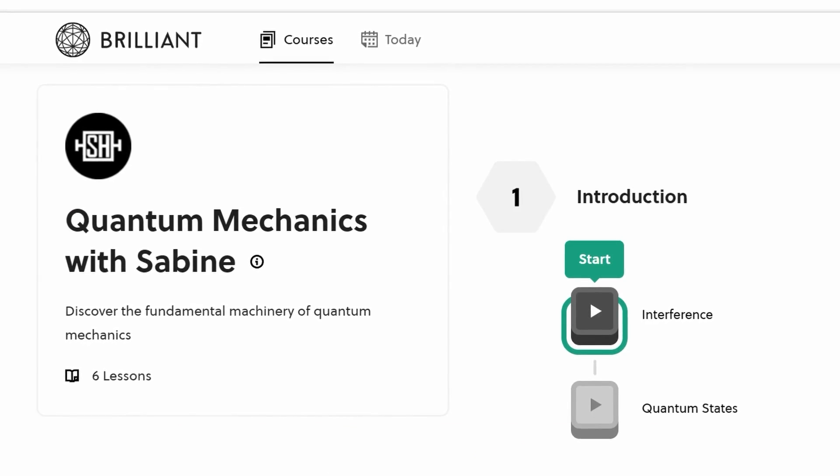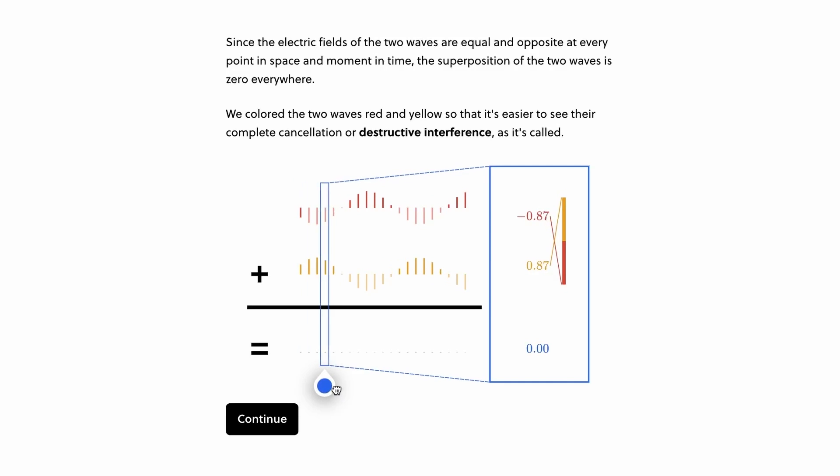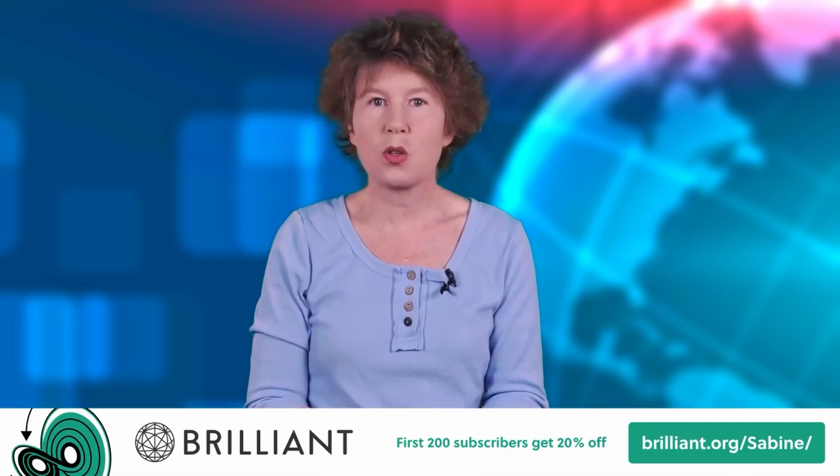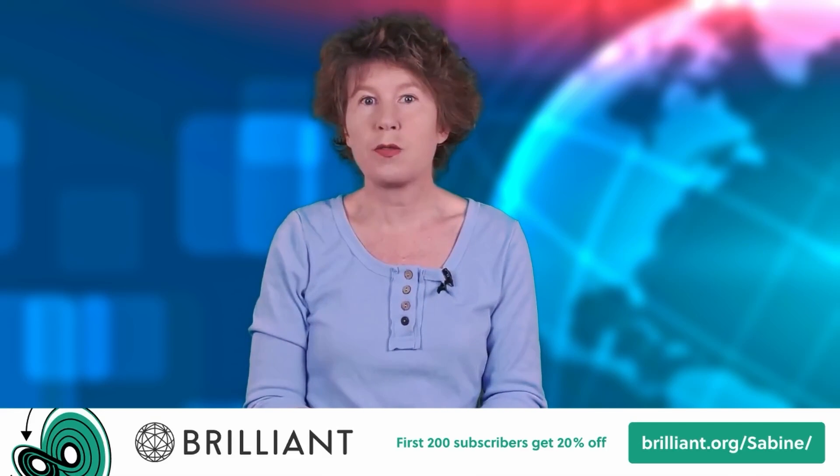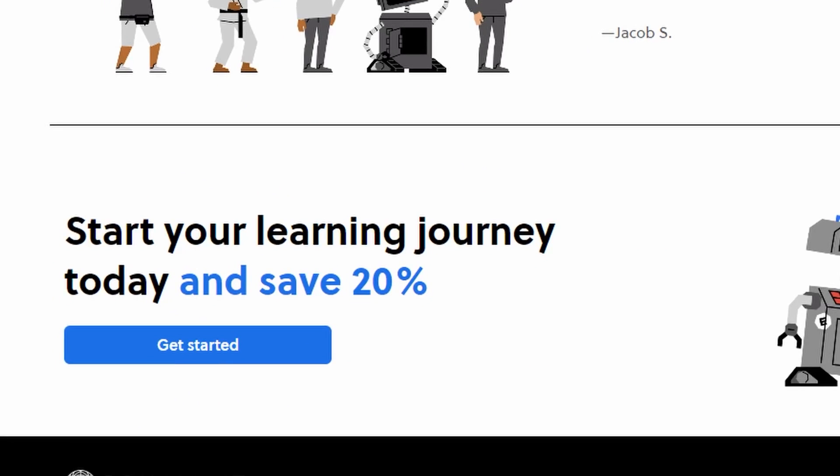It starts from the very basics and doesn't require you to bring background knowledge. My course covers topics such as interference, superpositions and entanglement, the uncertainty principle and Bell's theorem. And afterwards, maybe you want to continue learning more about quantum computing or special relativity. If you're interested in trying Brilliant out, use our link brilliant.org/sabine and sign up for free. You'll get to try out everything Brilliant has to offer for 30 days and the first 200 subscribers using this link will get 20% off the annual premium subscription. Thanks for watching. See you next week.